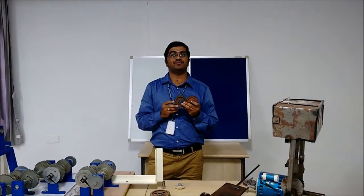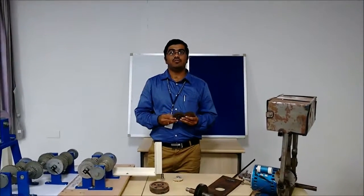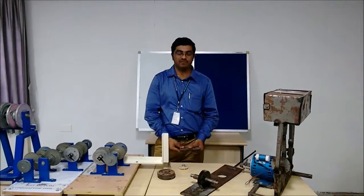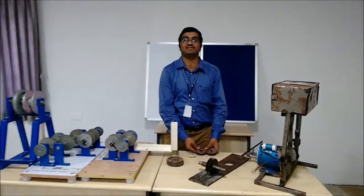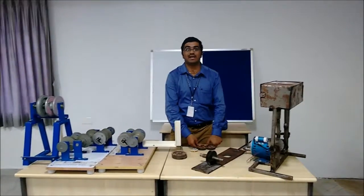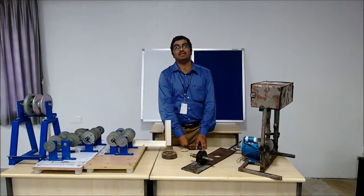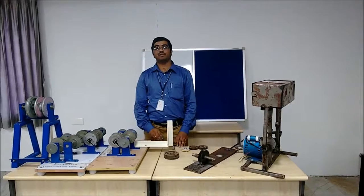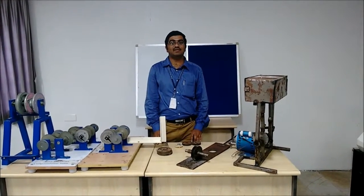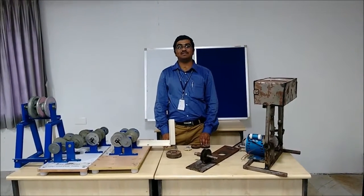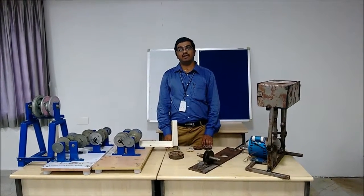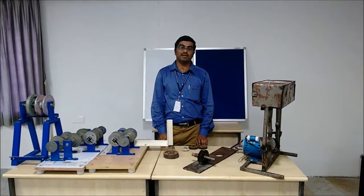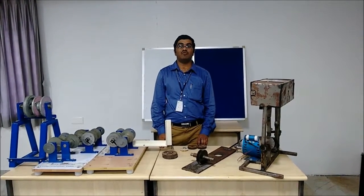Types of gears. According to the position of axis of shaft, there are three classifications. First one is parallel: spur gear, helical gear, rack and pinion. The second one is intersecting, example is bevel gear. Non-intersecting and non-parallel example is worm and worm gears.